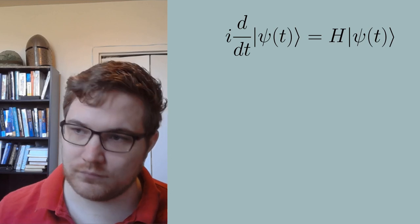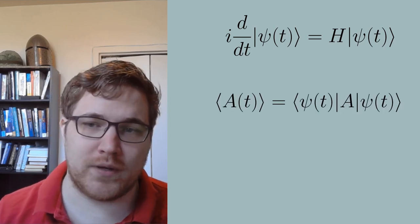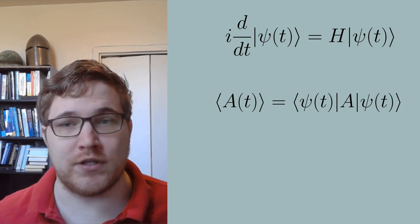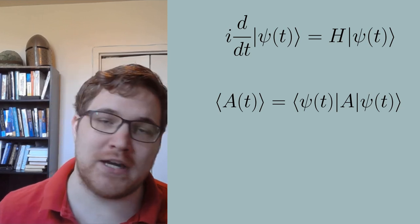The third type of problem one might be interested in would be time evolution. So this problem more or less involves solving the Schrodinger equation and tracking some observable in time. Here we are interested in things like going to equilibrium, how entanglement might build up, and of course many many other things.